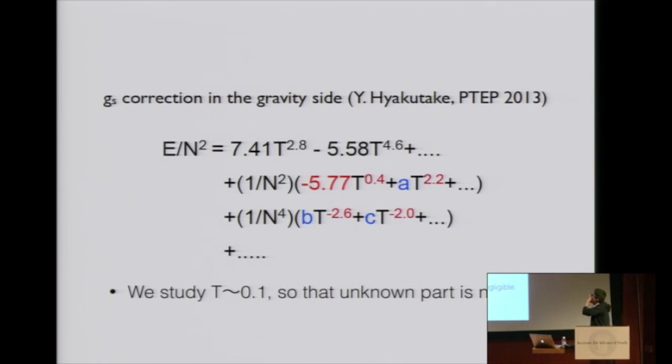In gravity side, Hyakutake recently calculated 1/n correction. This is one loop of string. This is two loop of string. 1/n coefficient: 1/n² is expanded by T^0.4 plus T^2.2 plus et cetera. Higher order terms corresponds to higher order in α'. Also, these coefficients A, B, C are unknown. He couldn't calculate. But he calculated the minus 5.77.